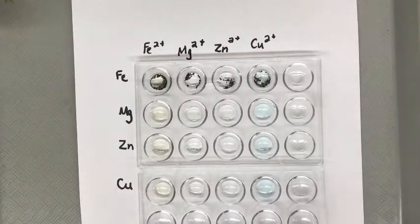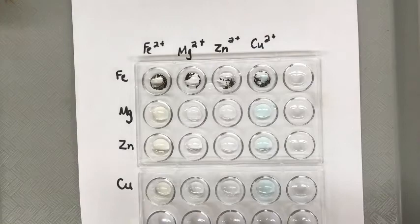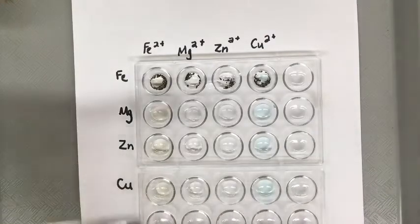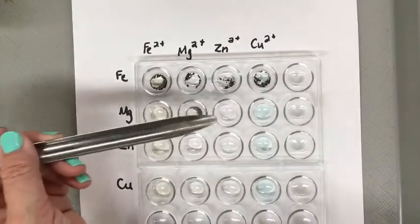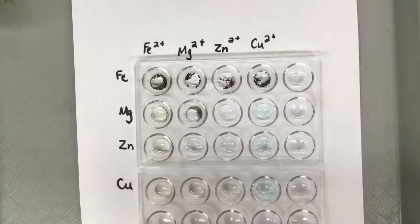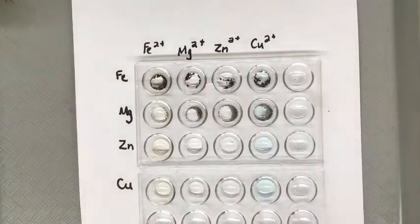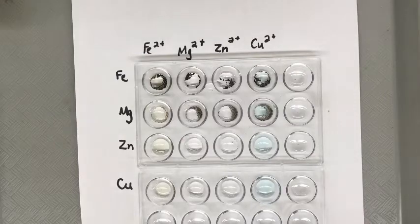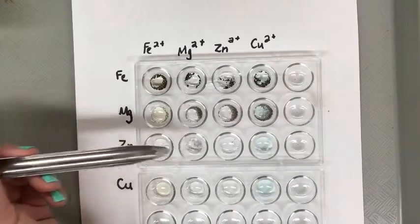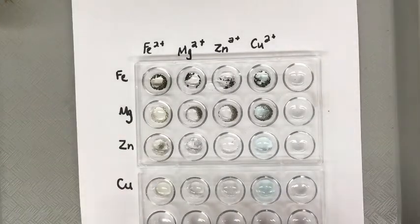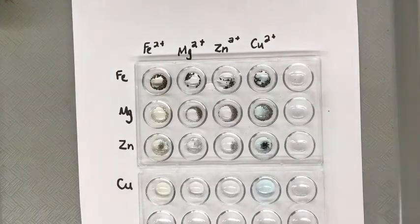Now we'll add a little bit of magnesium in the next one. We'll leave that. And now some zinc. There we go. You can see that the zinc is reacting readily with the copper.